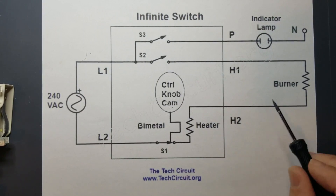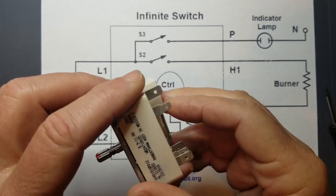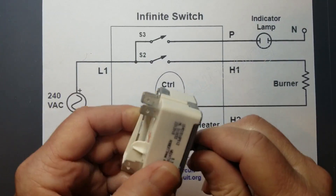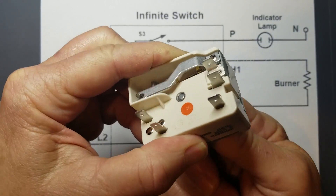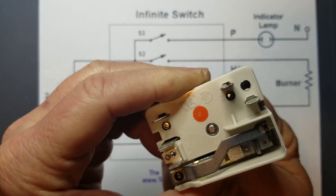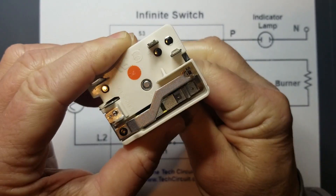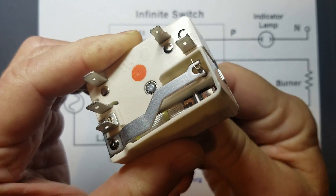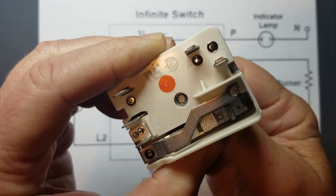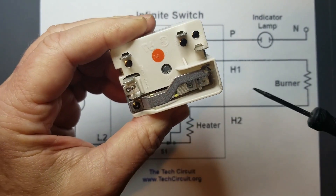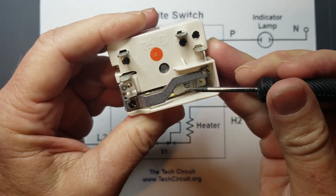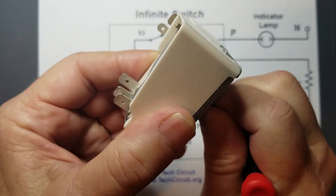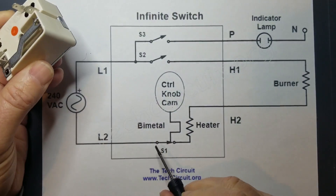To control the heat level of the burner, the knob is turned, which is connected to a cam. This cam adjusts the pressure against the bimetal strip, which makes it harder to bend. You can see that the strip rises and falls as you turn the knob. When the knob is turned to a higher heat level, more pressure is placed on the strip, making it harder to break the electrical connection. When the burner is turned on high, the strip is unable to break the connection and the burner is set full on.